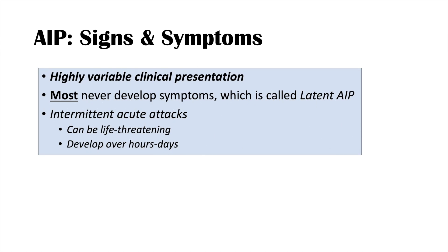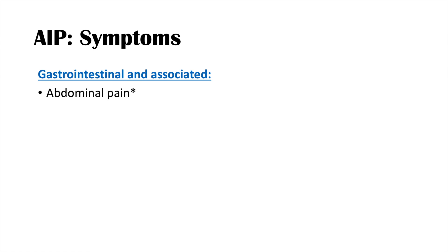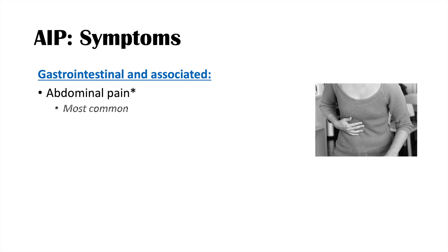What are the signs and symptoms of AIP? It has a highly variable clinical presentation. Most individuals never develop symptoms - called latent acute intermittent porphyria - but some get intermittent acute attacks that can be life-threatening and develop over hours to days. The classic triad of AIP signs and symptoms includes abdominal pain, seizures, and hyponatremia. Abdominal pain is the most common symptom, often severe and constant, described as cramping in nature.